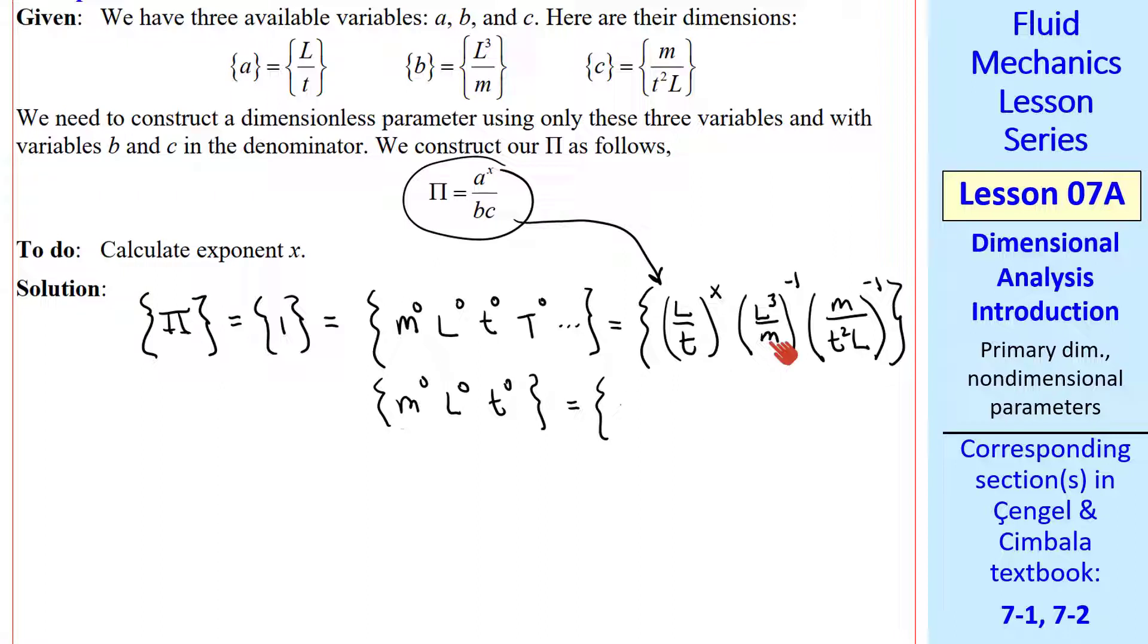Well, let's look at mass first. We have an M in the denominator, but it's raised to minus 1, so that's M to the 1 power. And then we have an M to the minus 1, so we write M to the minus 1. And we can add exponents when they're multiplied like this. So this is M to the 1 minus 1, or M to the 0. So this pi is dimensionless in respect to mass, regardless of the value of X.